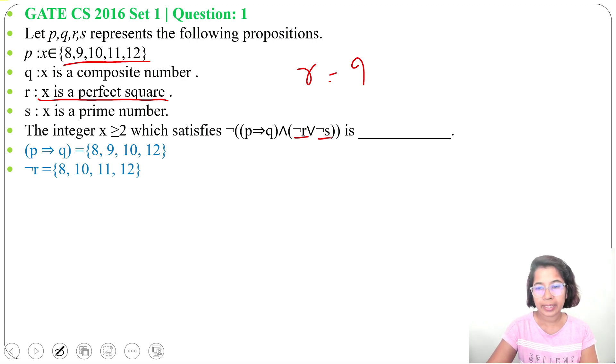Next we will find ¬S. What is S? X is a prime number. So what is prime from this? 11 is prime. Now ¬S will be {8,9,10,12}.